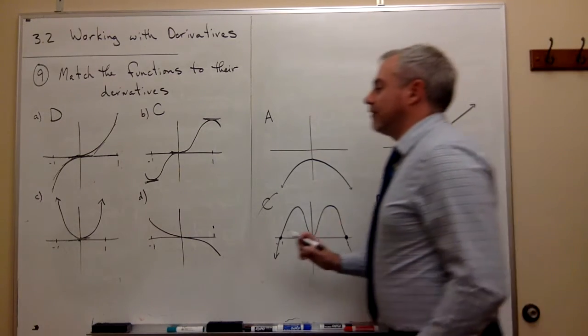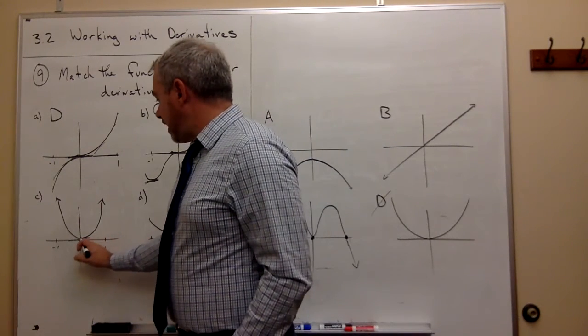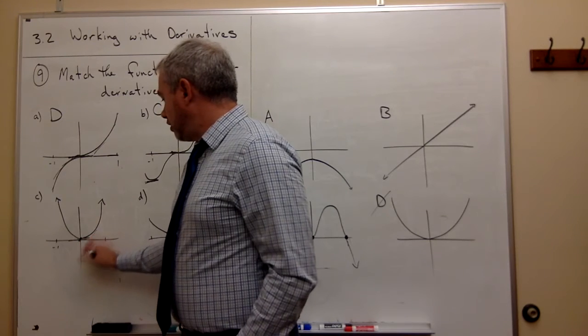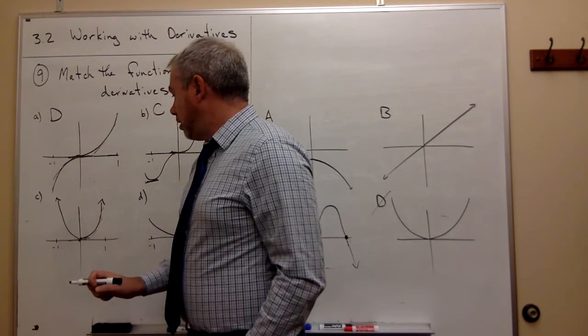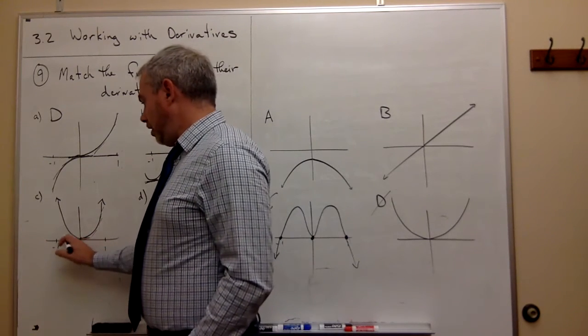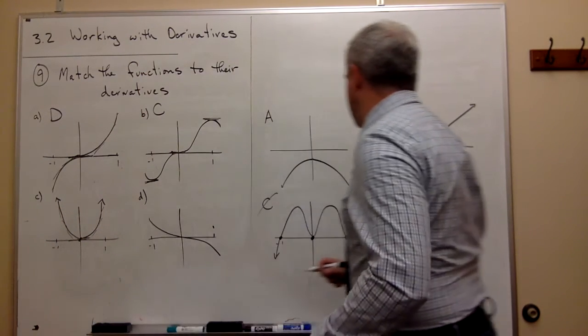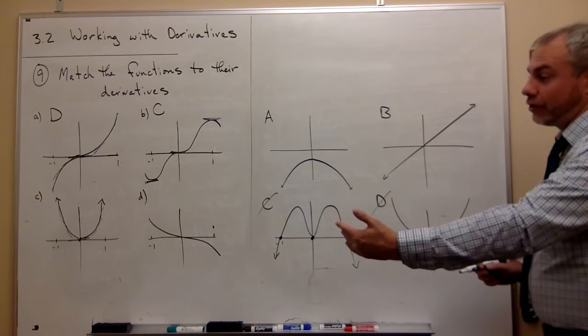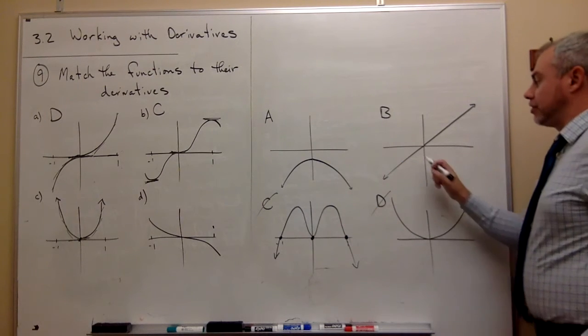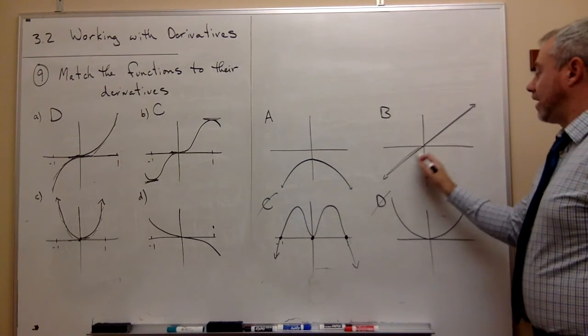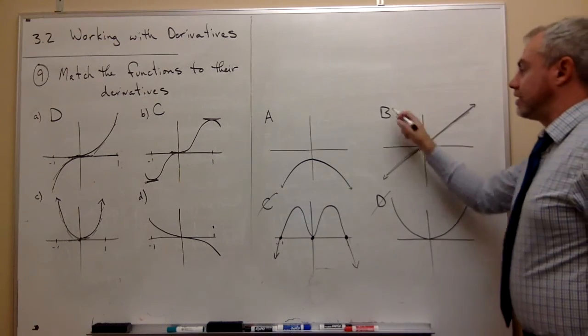But if you want to look at it even closer, on the right side of the origin, the slopes are all positive, and on the left side, the slopes are all negative. So we need negative values to the left of the origin and positive values to the right. Negative to the left, positive to the right. So it's B.